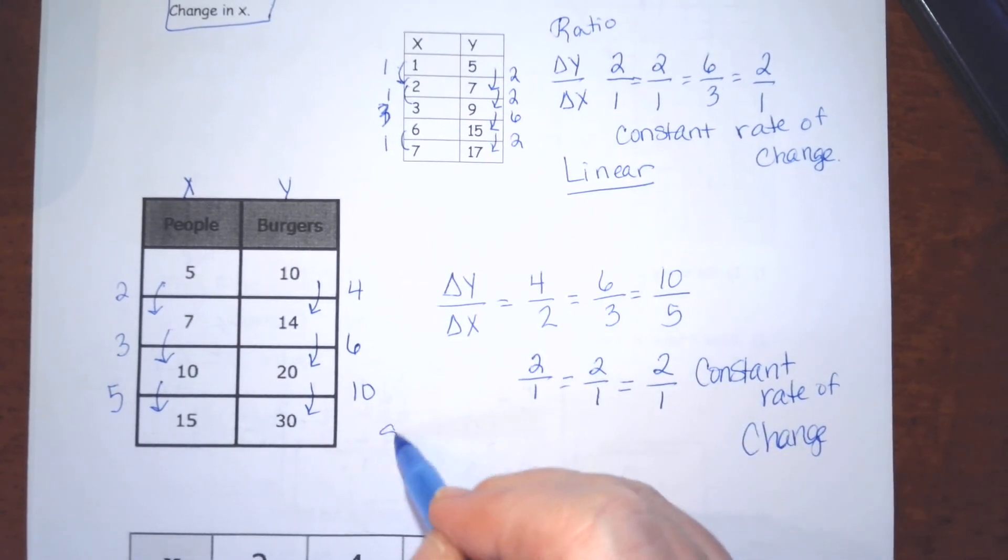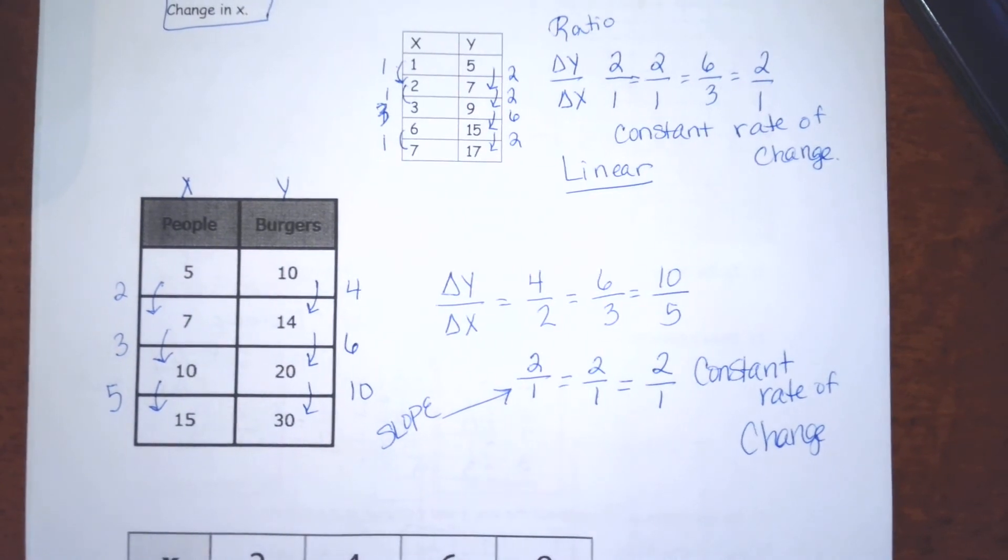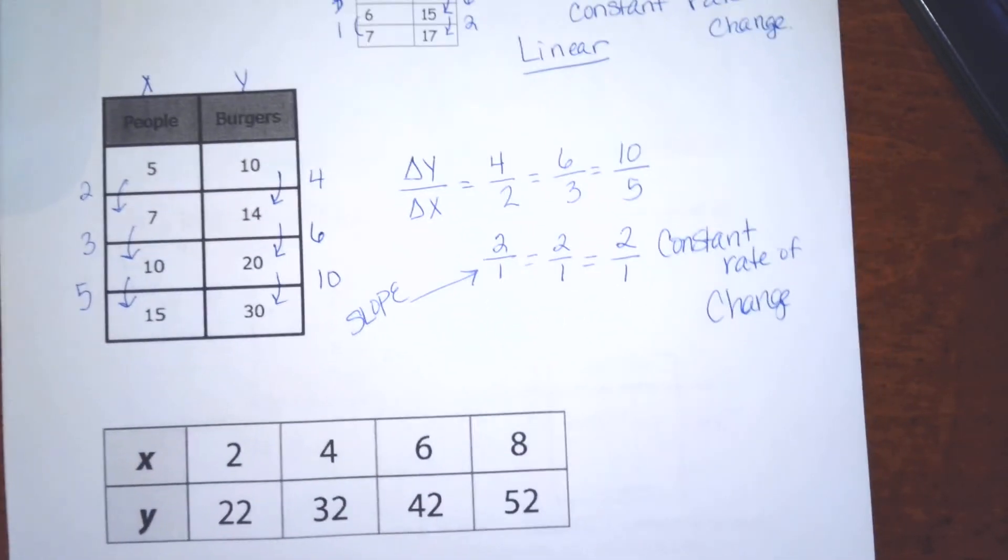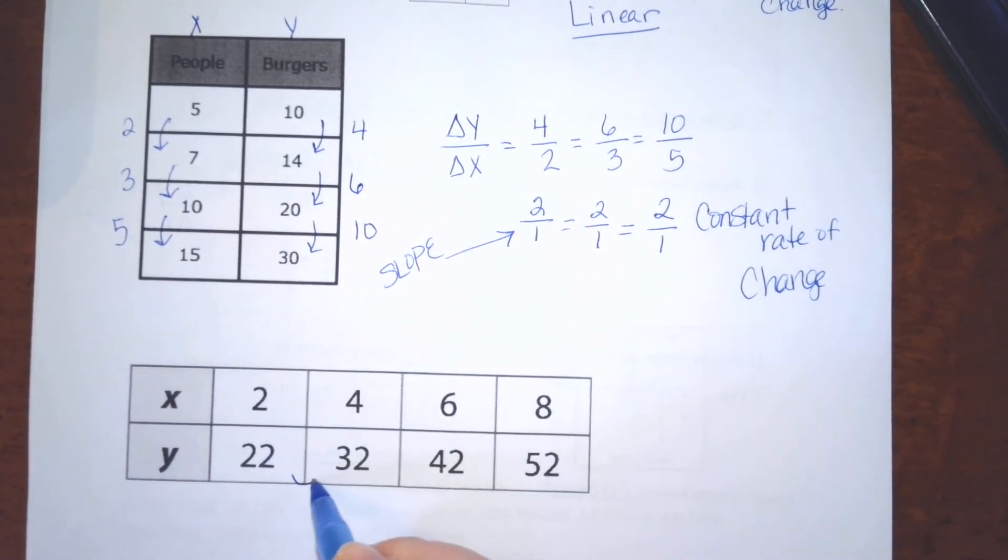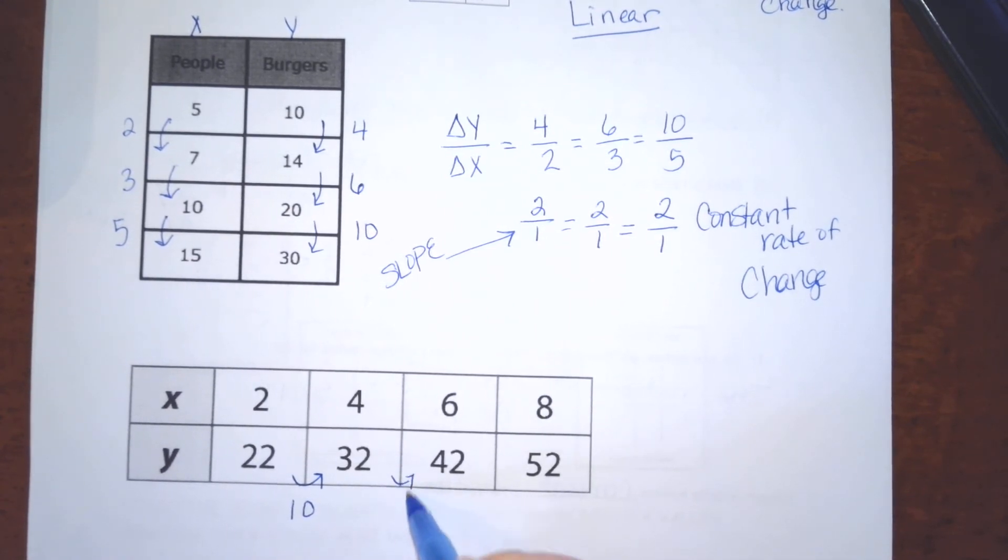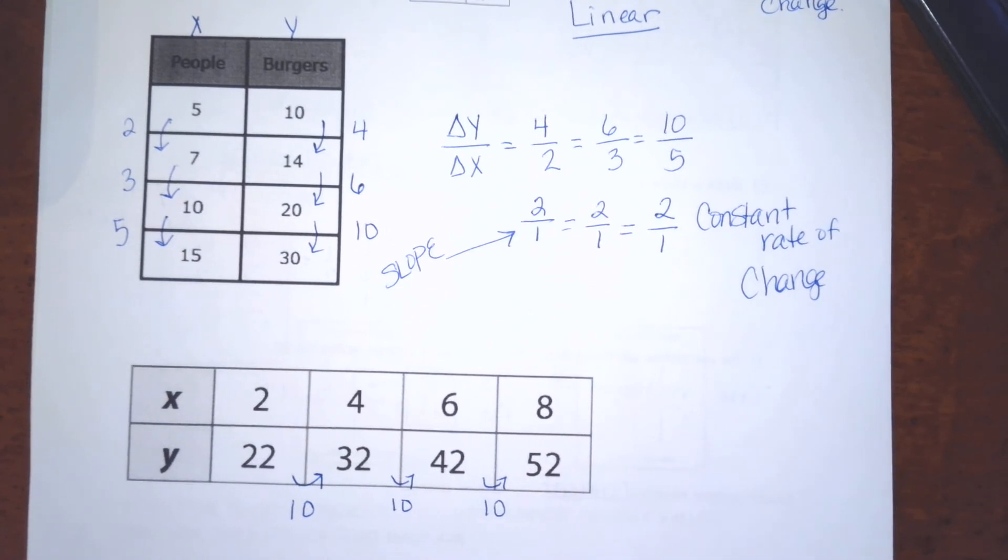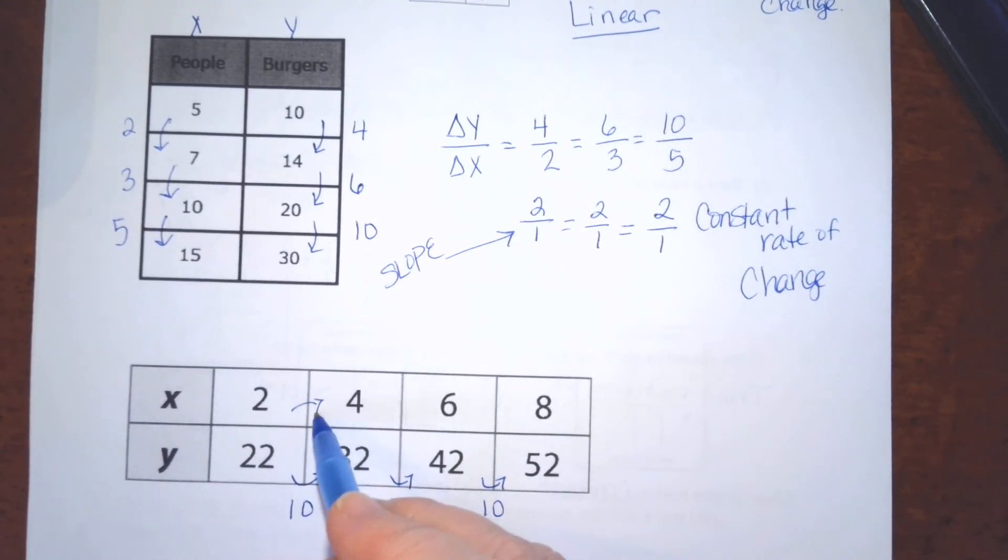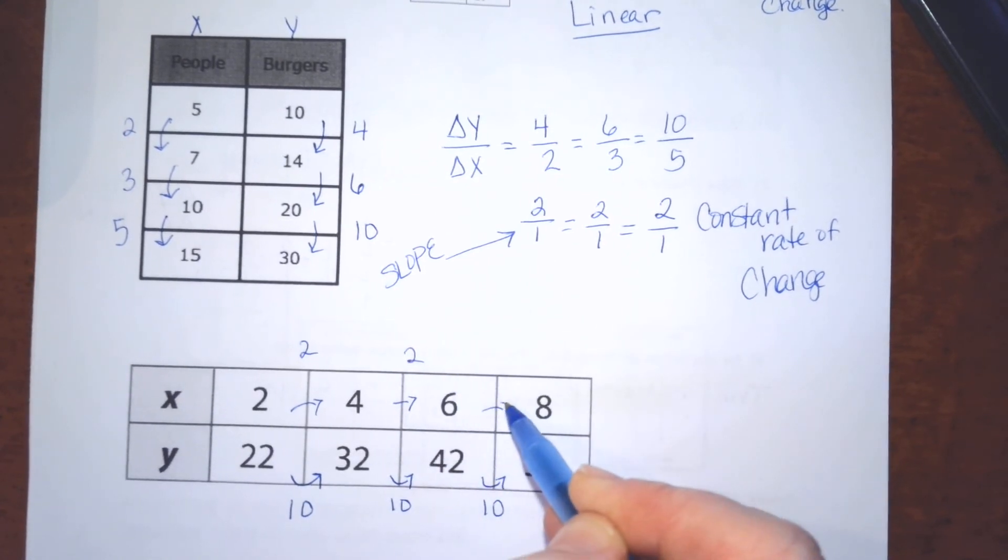If we were looking for slope, which we'll be doing in just a minute, it would be that constant rate of change in simplified form. Now, this table is given to us horizontally, but we're going to do the same thing. We're going to find the change in y, which goes up 10. The change in y goes up 10. The change in y goes up 10. And we're going to find the change of x, which is 2, 2, 2.